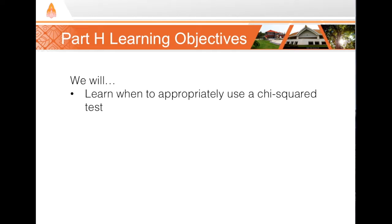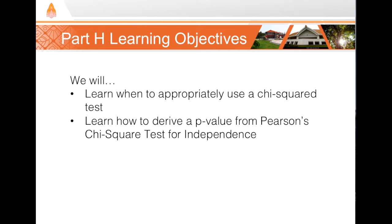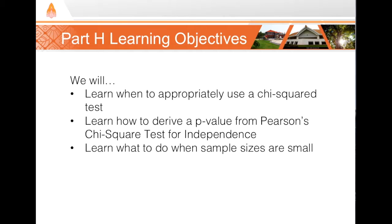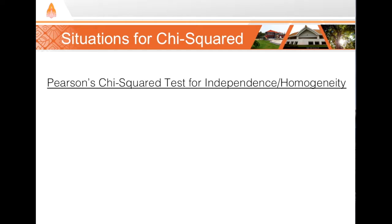In this section, we'll talk about when we can use a chi-square test. Then I'll show you the steps to derive a p-value using Pearson's chi-square test for independence or homogeneity. Finally, I'll show you what to do when your sample size is small. When we talk about chi-square tests, we're talking about a family of statistical tests. They all use similar methodology and compute a chi-square value, but they each serve a slightly different purpose.